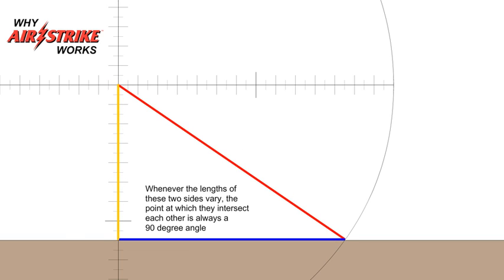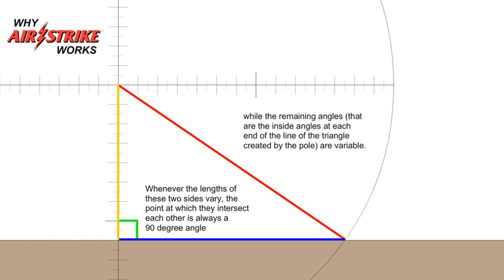Whenever the lengths of these two sides vary, the point at which they intersect each other is always a 90-degree angle, while the remaining angles that are the inside angles at each end of the line of the triangle created by the pole are variable.